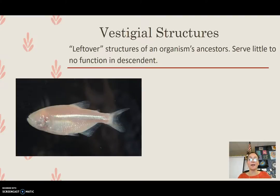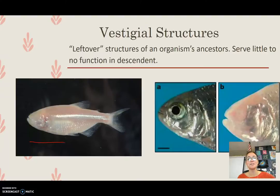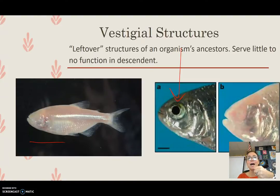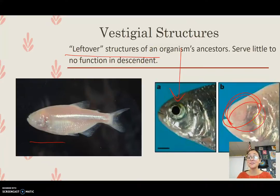Another cool example is blind cave fish. These fish are missing eyeballs and have little pigment. They live in caves, and their ancestors had eyes, but deep in completely dark caves, eyes are not necessary. It was actually high fitness to stop developing eyes because it conserved resources during development. A mutation that stopped eyeball development became high fitness. The descendants today have eye sockets — a vestigial structure showing where eyeballs used to be in their ancestors — but the eye socket serves little to no function in the descendant.